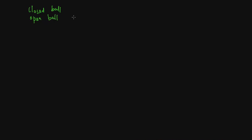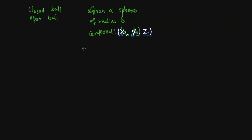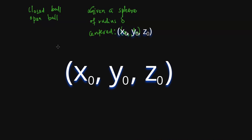In three-dimensional space, instead of dealing with circles we'll be dealing with a sphere. Given a sphere of radius delta centered at (x₀, y₀), the set of all points enclosed by this sphere would be referred to as the open ball of radius delta centered at (x₀, y₀). And the set of all points enclosed by this sphere, including the ones on the sphere as well, would be called the closed ball centered at (x₀, y₀) with radius delta.